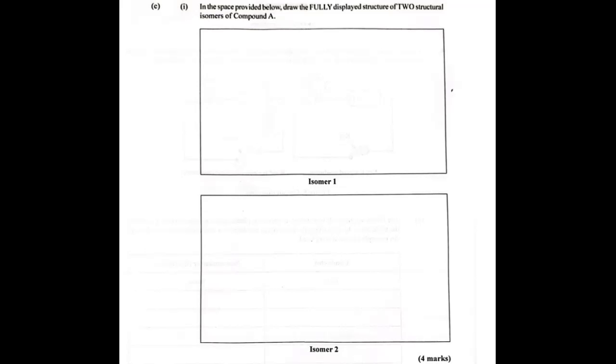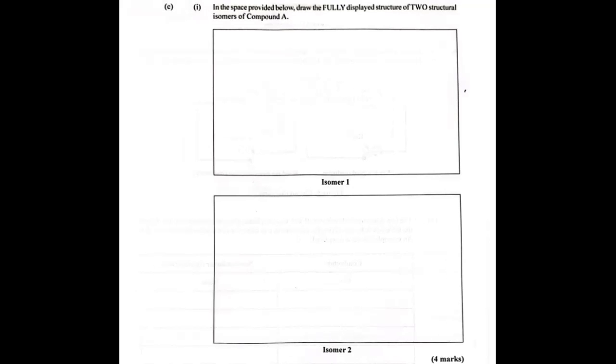So part C, part 1 of C. In the space provided below, draw the fully displayed structure of two structural isomers of compound A. Now you can scroll back to look at compound A and you'll see they gave it a straight chain. You could call it N-hexane. It's six carbons. But the other thing to note is that we can't use the one they gave us. We need two different structures. So the one they gave us earlier on, that is out. So what we're going to do, we're going to take that same one and we're going to cut it up. We're going to form a new structure, a structure that's different from the one that was given.